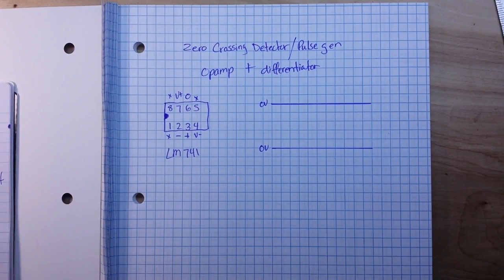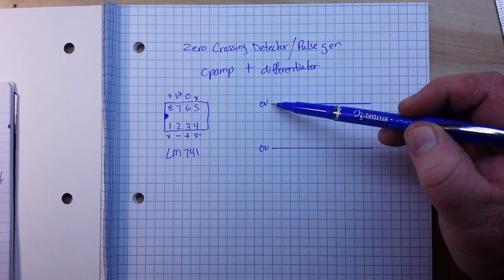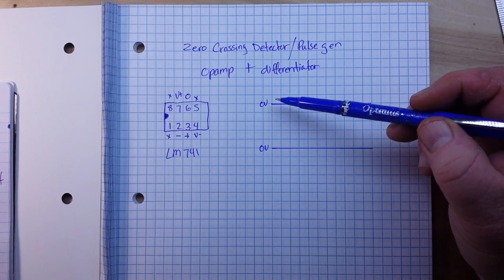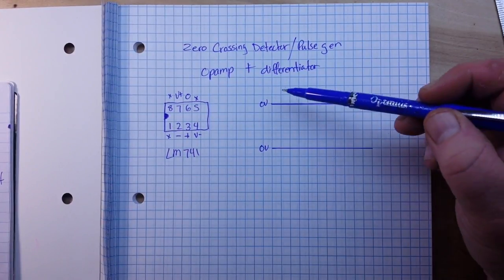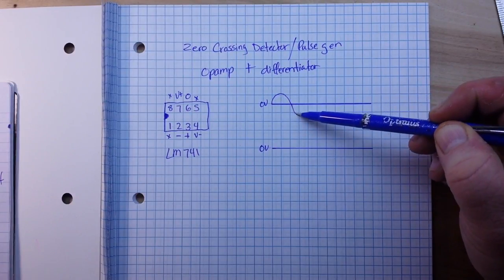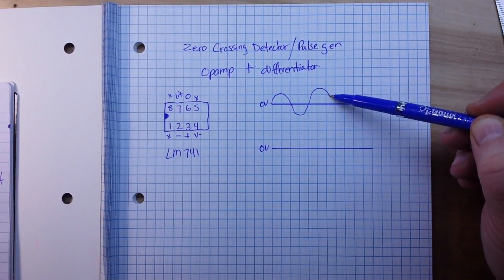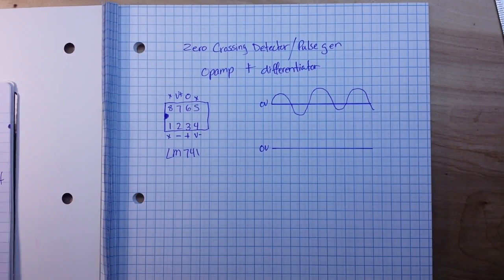So why are we doing this? Well, let's say you need or you have a digital circuit that needs a pulse input for timing, but your input happens to be a very analog circuit, in this case a sine wave.